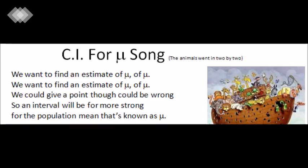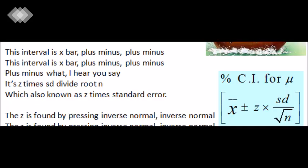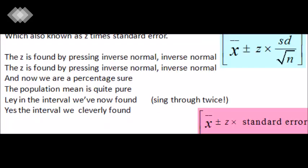We want to find an estimate of mu. We could give a point but could be wrong, so an interval will be far more strong. For the population mean that's known as mu, this interval is x bar plus minus z times st over root n, which is also known as z times standard error. The z is found by pressing inverse normal. And now we are a percentage sure the population mean is in the interval we've now found.